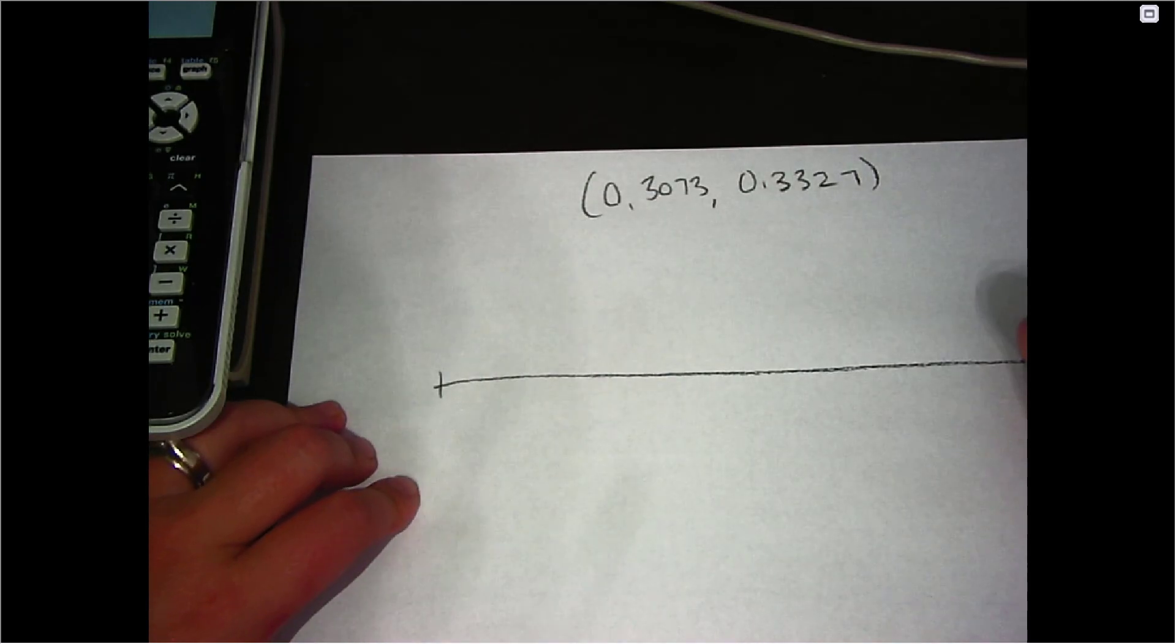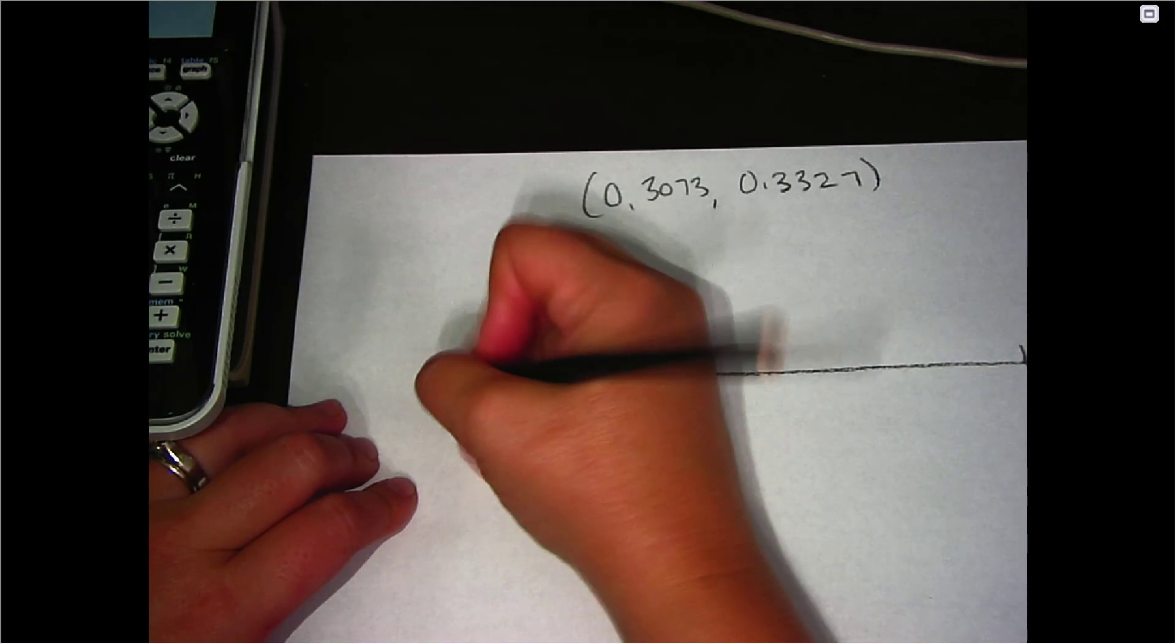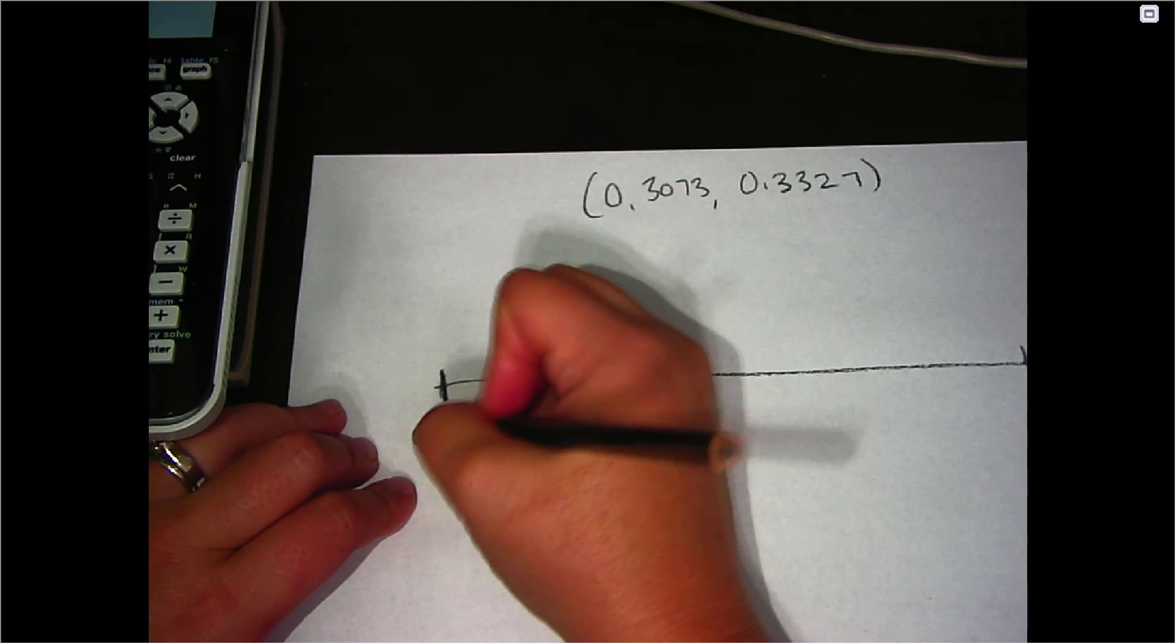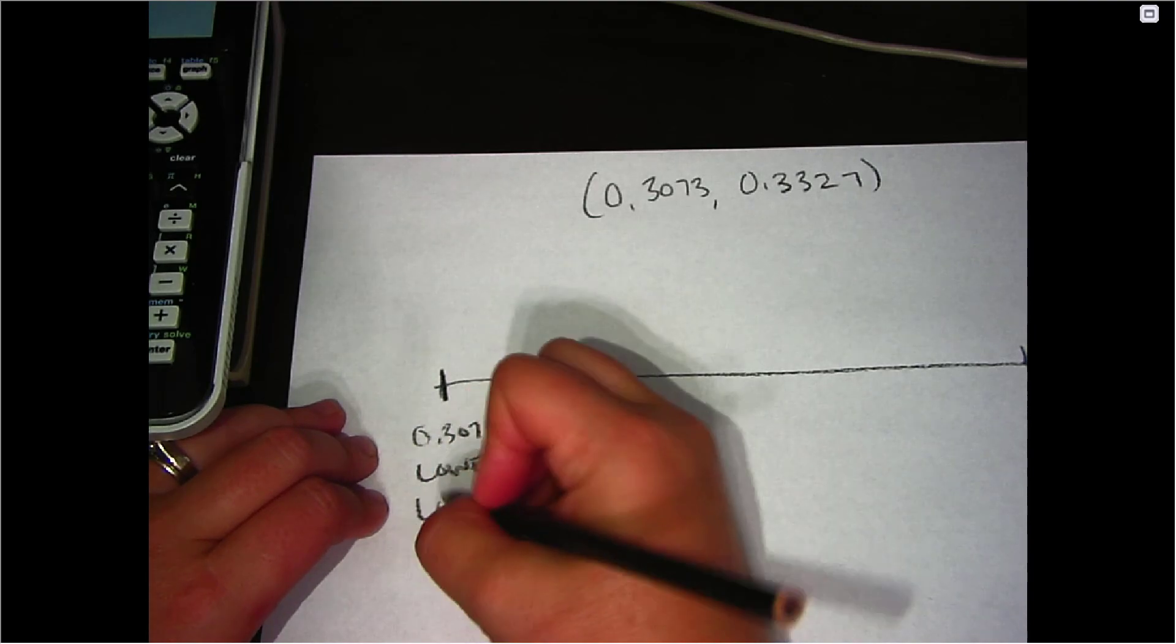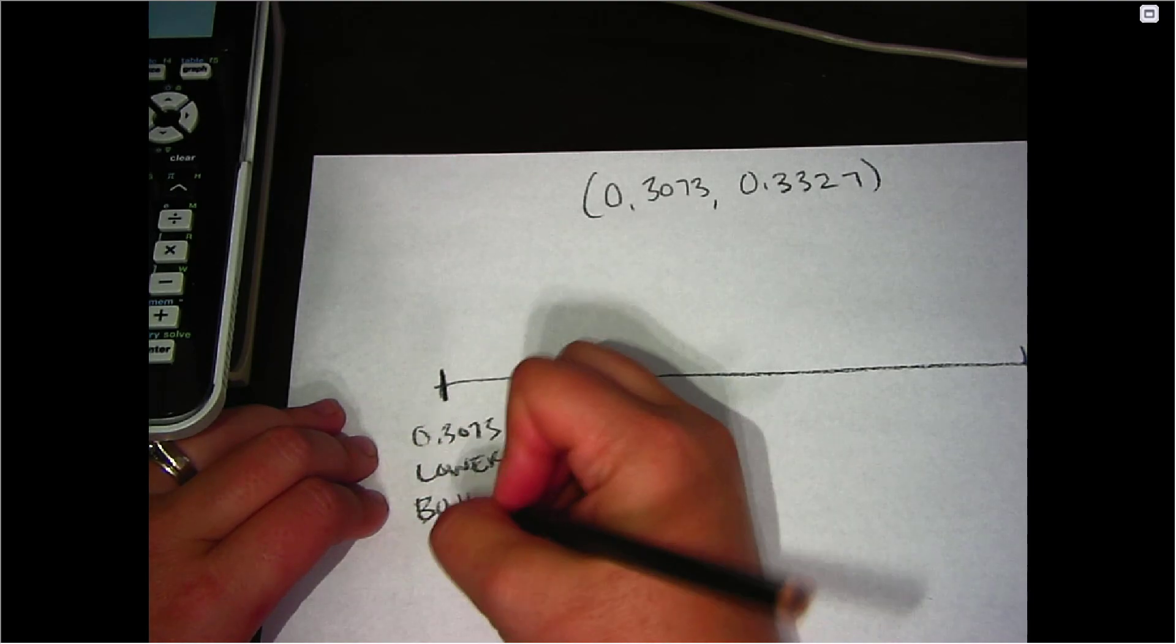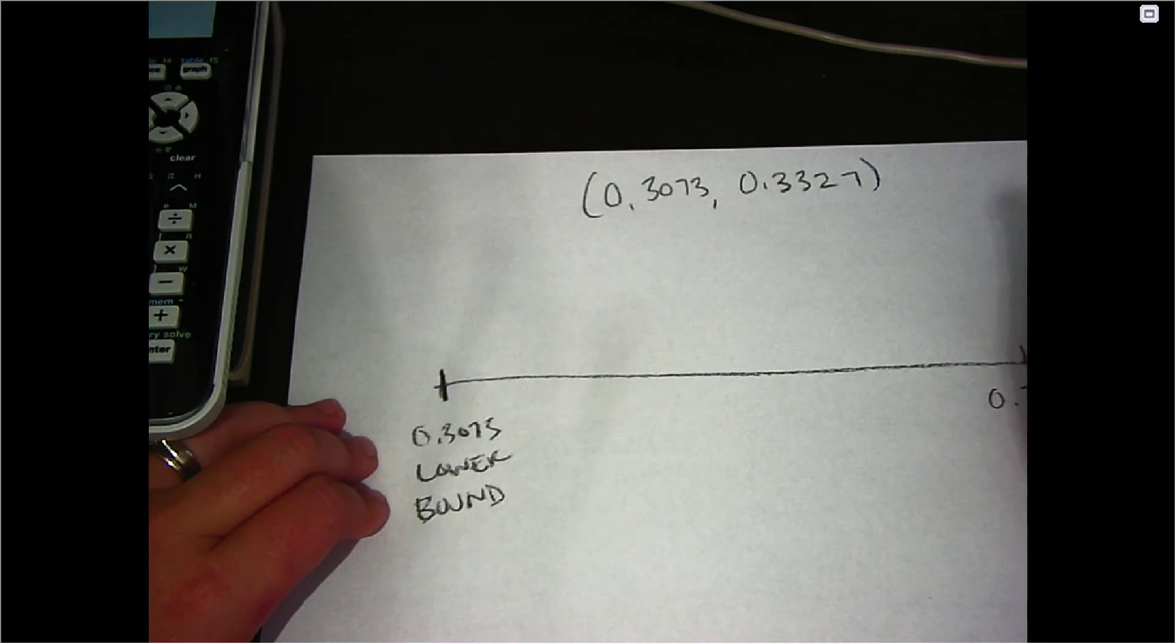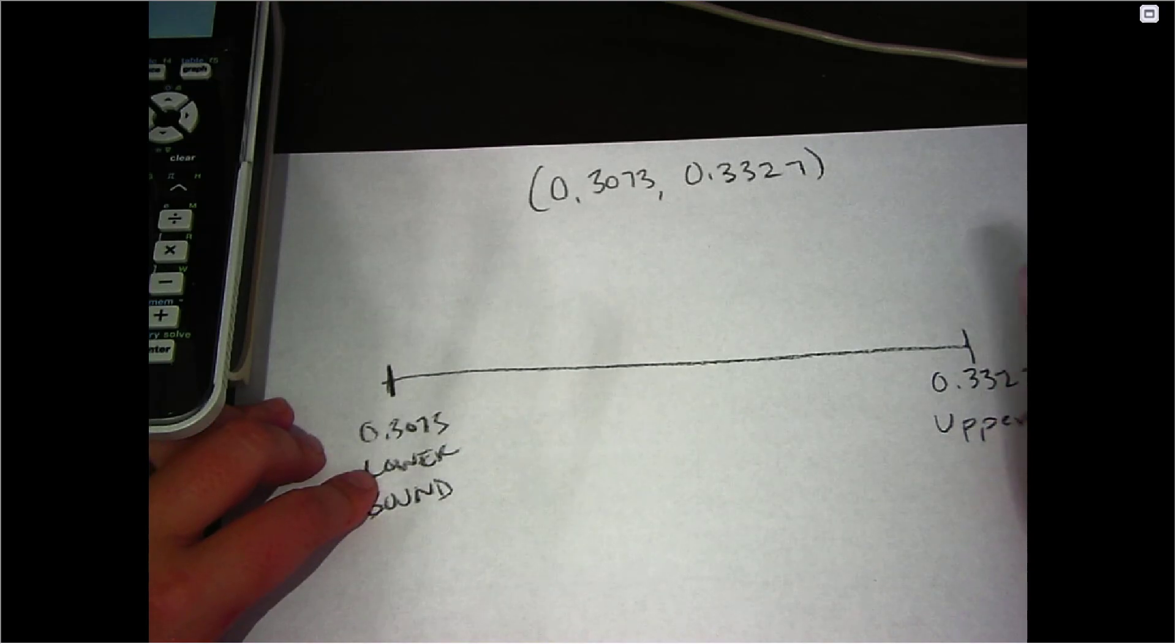When you draw that, if you were to try to visualize it, that means that you have this value on a number line and that's what we would call the lower bound. And then the 0.3327 is your upper bound.